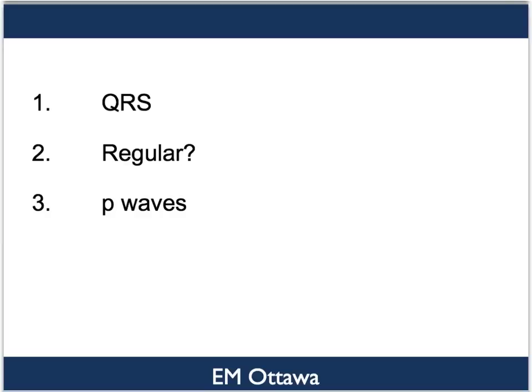There are a few classifications to define the types of tachycardia: 1. Whether the QRS is narrow or wide. 2. Whether the rhythm is regular or irregular. 3. Whether there are P-waves.